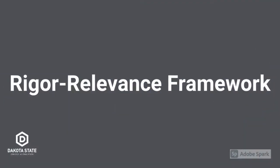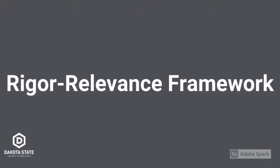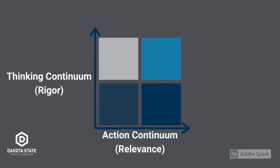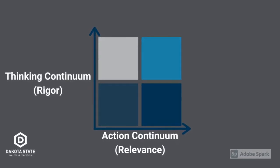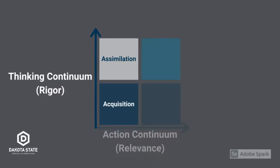The rigor relevance framework is a tool that can help you think about how you use technology in the classroom. It has two continua: the thinking continuum, which is rigor, and the action continuum, which is relevance.